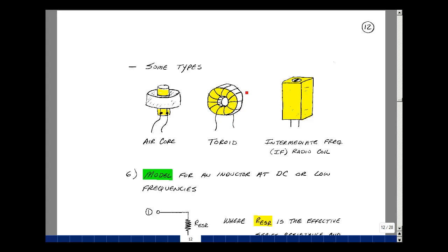You might find these in a switch mode power supply or a computer power supply. If you look inside a radio, you might see what looks like little cans, but what's inside there is a coil. These are called IF, or intermediate frequency radio coils.